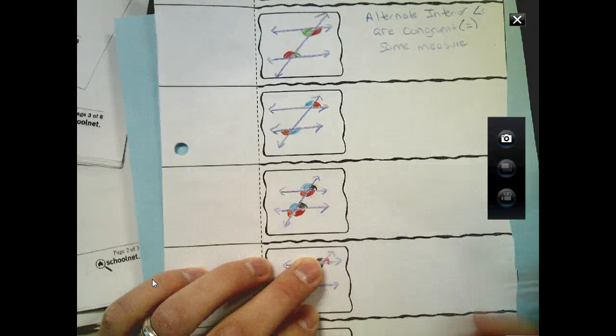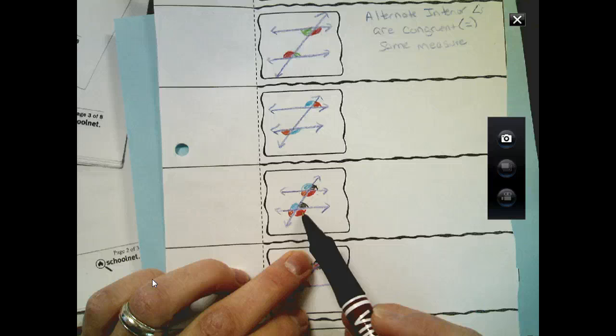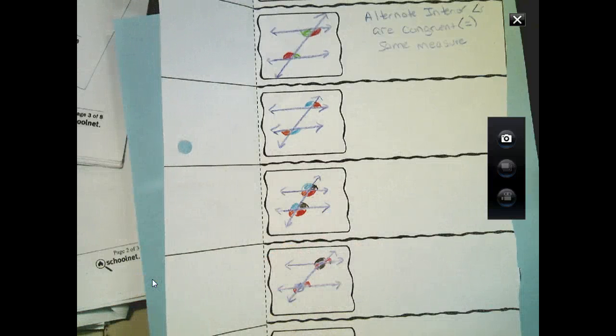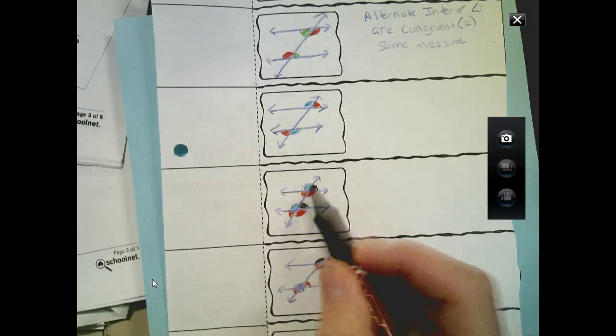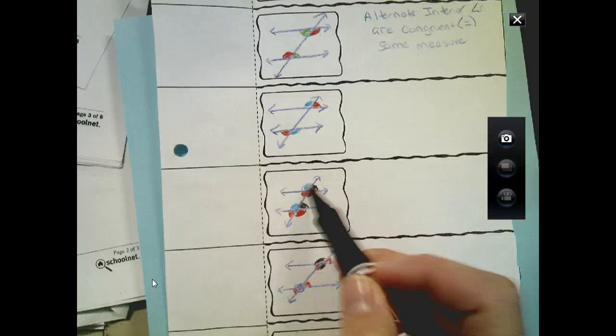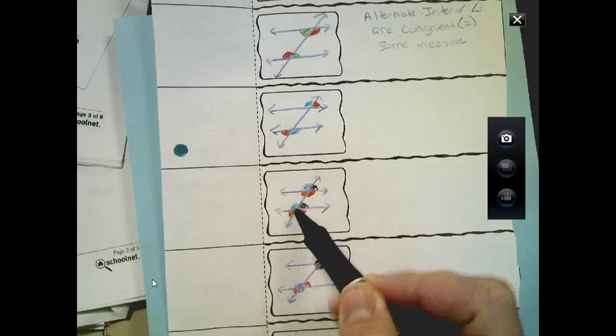Outside, inside, they're corresponding. Again, outside, inside. Outside, again, they're congruent. So, corresponding, outside, inside. One's outside the parallel lines, one's inside. And again, here, they're the same measure. So, if this one is 110 degrees, this one's 110 degrees.